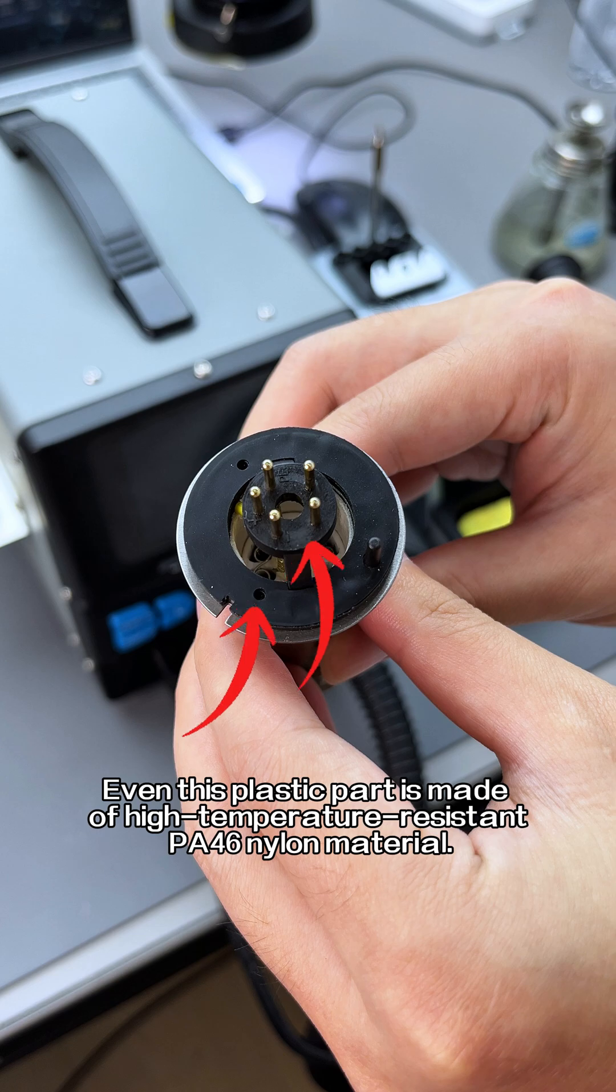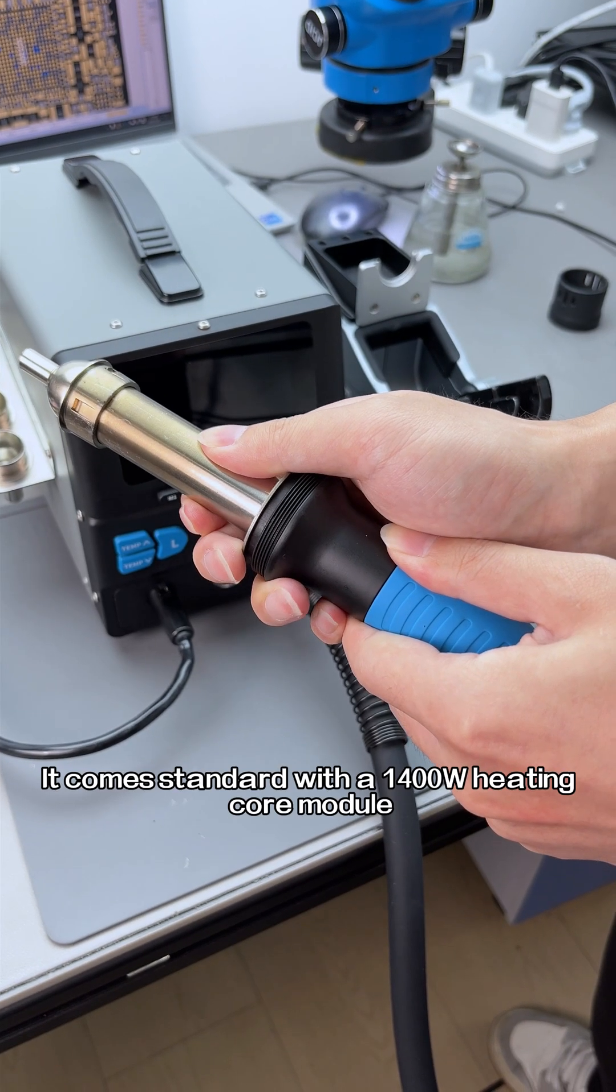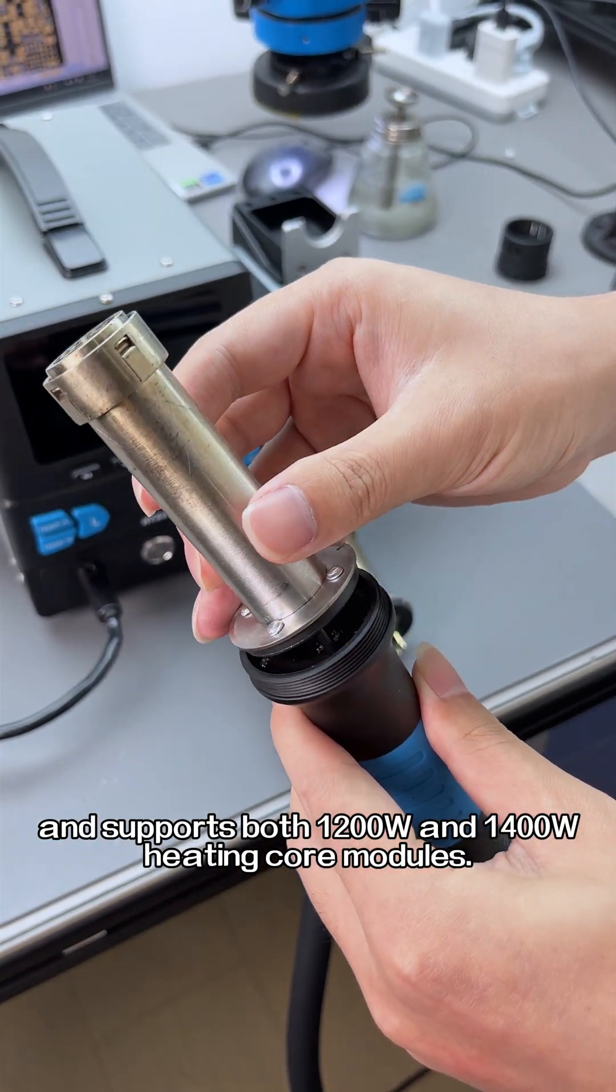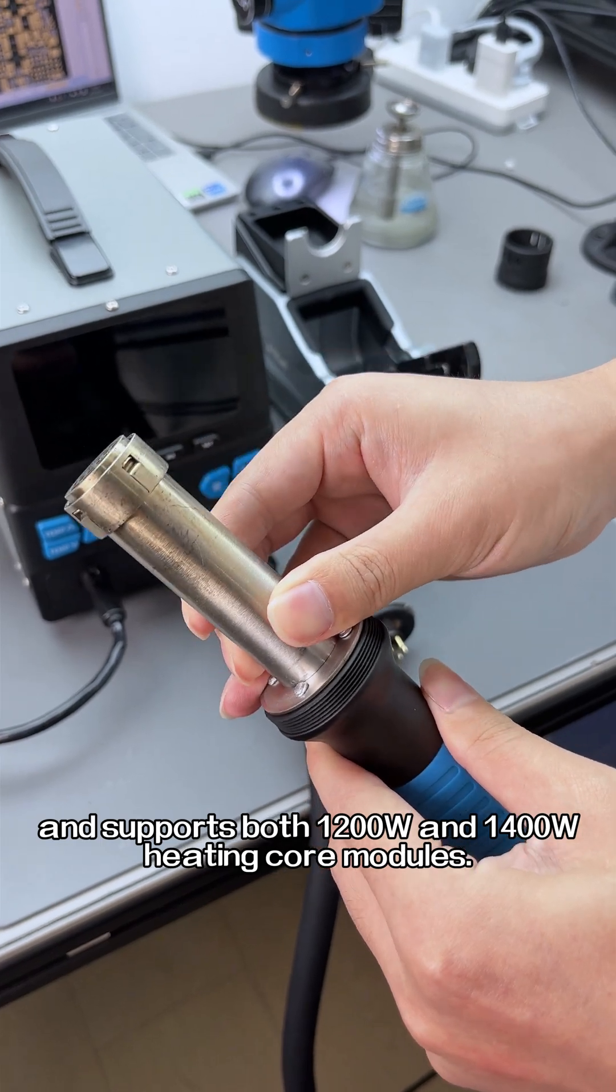Even this plastic part is made of high temperature resistant PA46 nylon material. It comes standard with a 1400W heating core module and supports both 1200W and 1400W heating core modules.